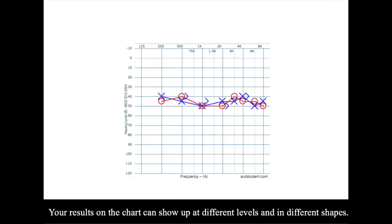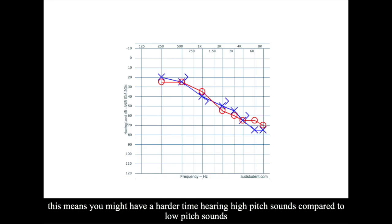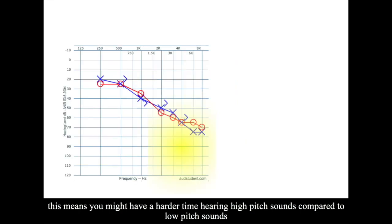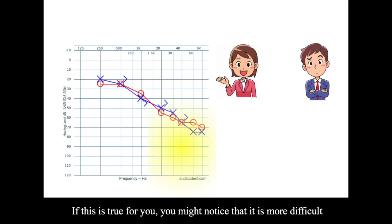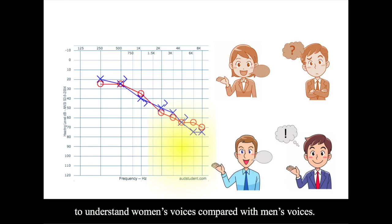Your results on the chart can show up at different levels and in different shapes. It is common for hearing results to slant downwards. This means you might have a harder time hearing high pitch sounds compared to low pitch sounds. If this is true for you, you might notice that it is more difficult to understand women's voices compared with men's voices.